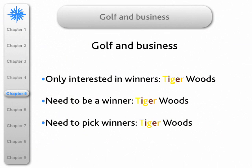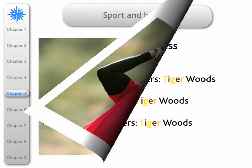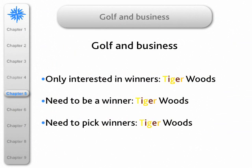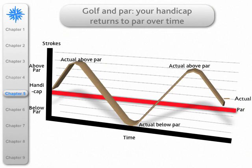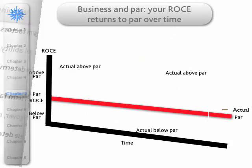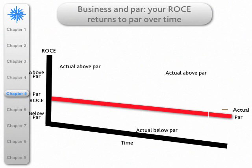Let me look at another connection between sport and business — that is golf. You see a photograph of the world number one in golf: Tiger Woods. We're really only interested in winners; we need to be a winner like Tiger Woods and pick winners. It's the same in business. I've already explained in a previous broadcast how your golf handicap represents your power level over time — sometimes you play better than your handicap, sometimes worse, but over the long run you'll average your handicap.